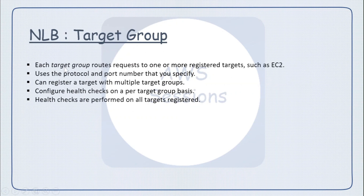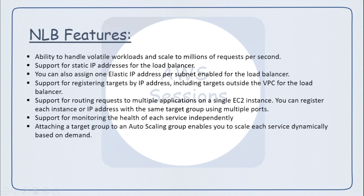For target groups — each target group routes requests to one or more registered targets. You define the protocol and ports. You can register a target with multiple target groups; for example, an EC2 instance can be a target in multiple target groups. You can also configure health checks, which will be performed on all the targets inside the target group.